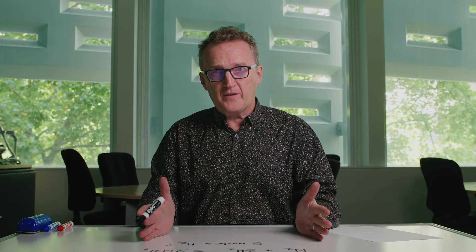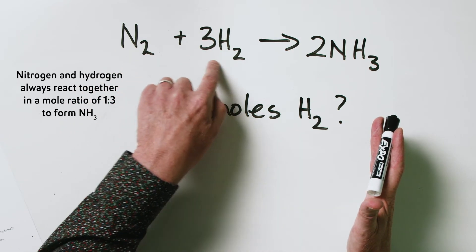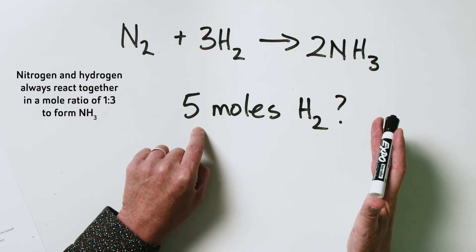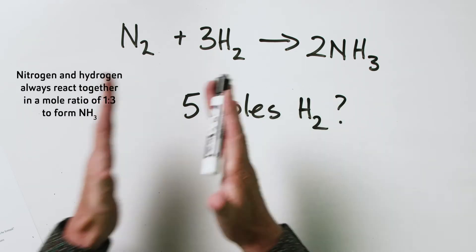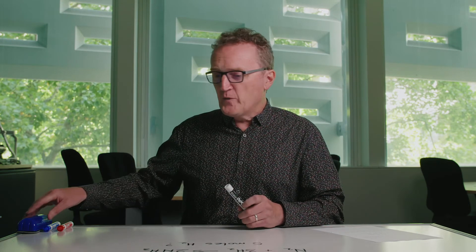This is where 90% of student problems with stoichiometry come from — the mole ratio. We know the mole ratio is one to three, but where students often go wrong is not knowing whether to multiply by three or divide by three. So I'm going to show you a little trick that will help you remember how to get this the right way around.